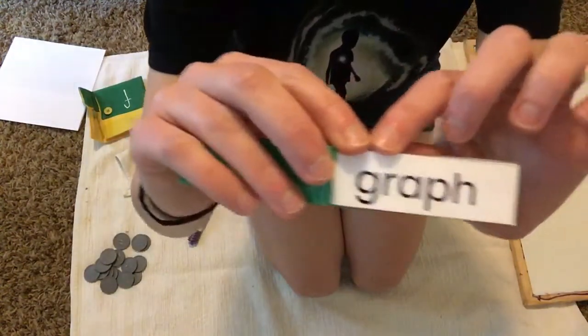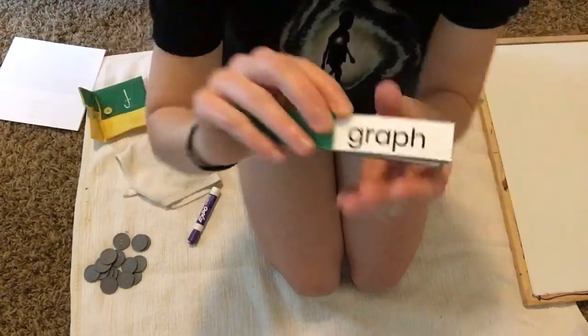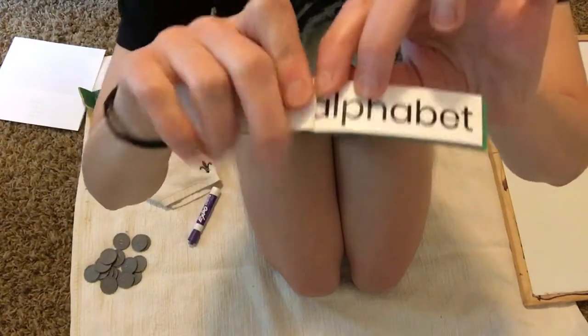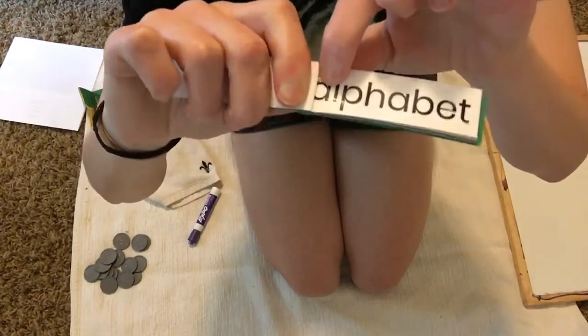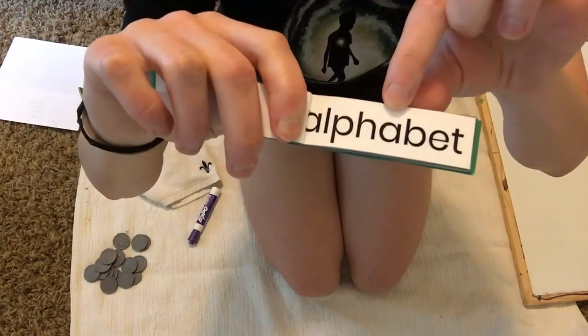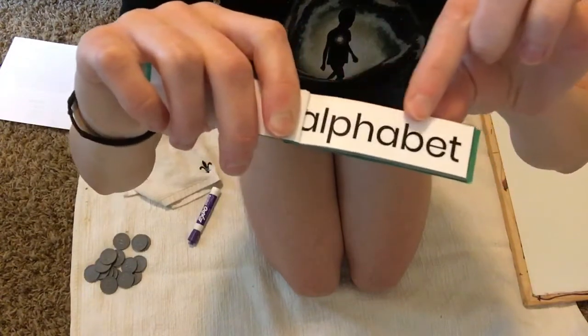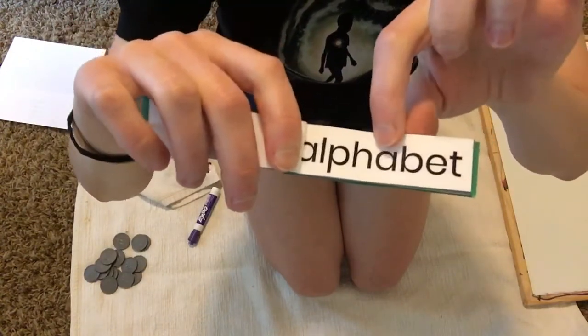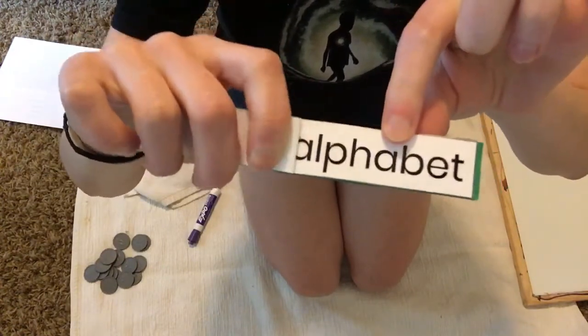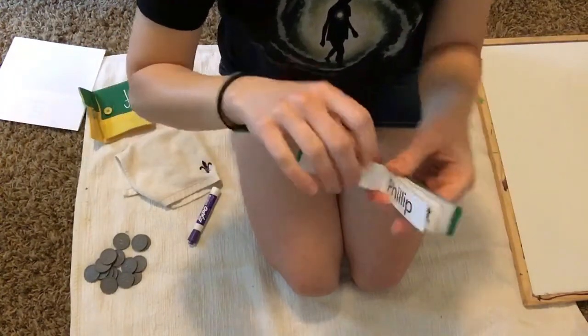So let's read them. Graph, and it's kind of hard to see but that is an A. Alphabet. Sometimes we want to say Al-F-A-B-E-T but it is an A and not a U. Alphabet.